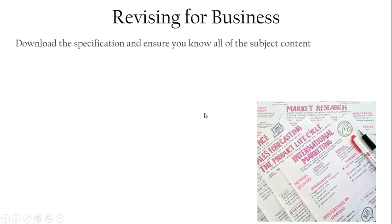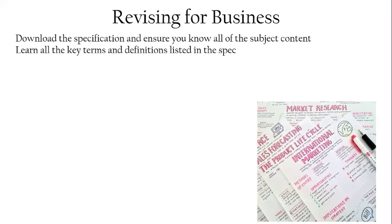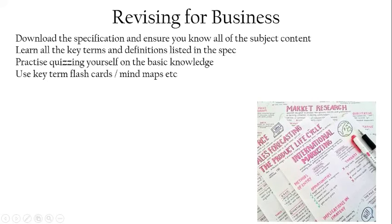So how do you go about revising for Business? First, download the specification and ensure you know all of the subject content — it's your responsibility. Make sure you know all of the key terms and definitions listed in the specification. You can practice quizzing yourself on the basic knowledge; quizzing is a really effective method. Use key term flashcards, mind maps, etc. — whatever works for you. Good business flashcards have a colorful title, pictures, and neatly laid out bullet points distilling the important information onto an easily presented card.